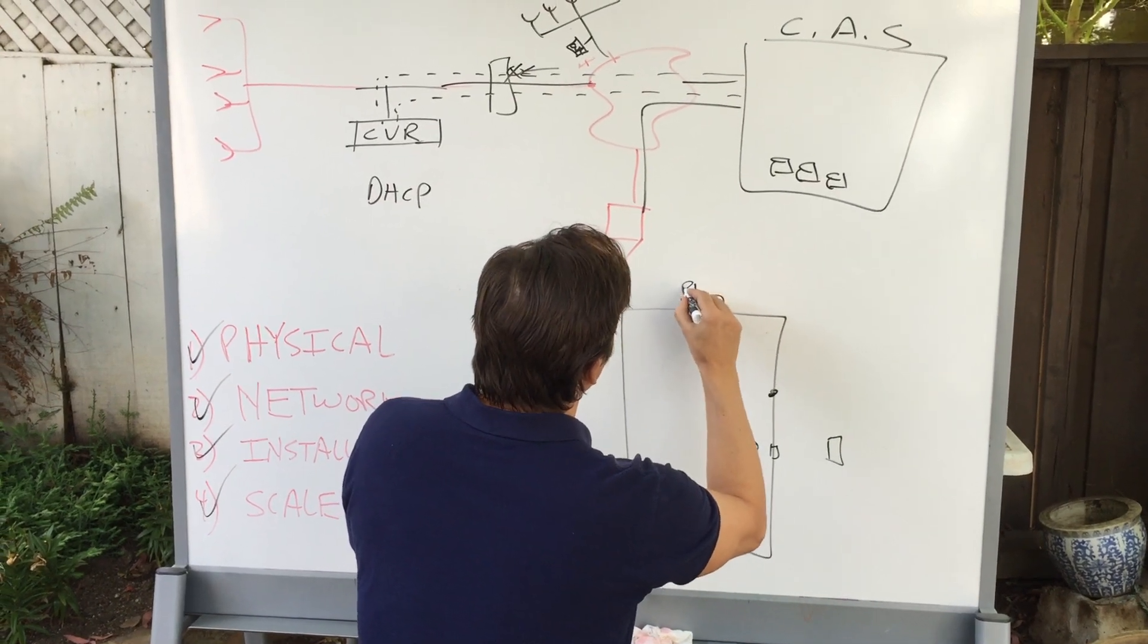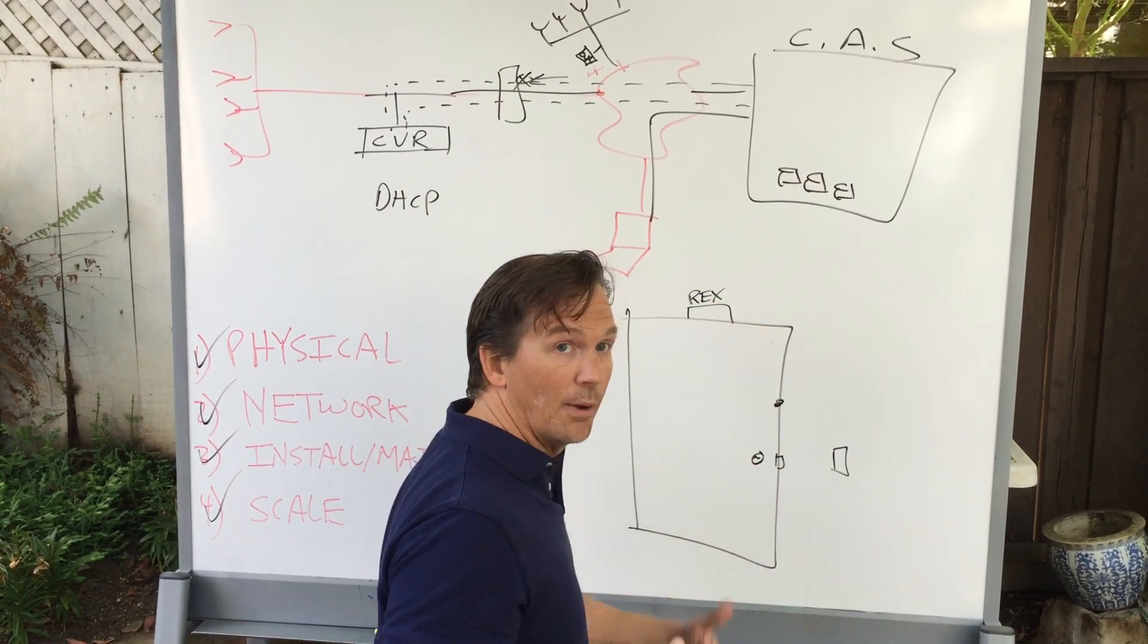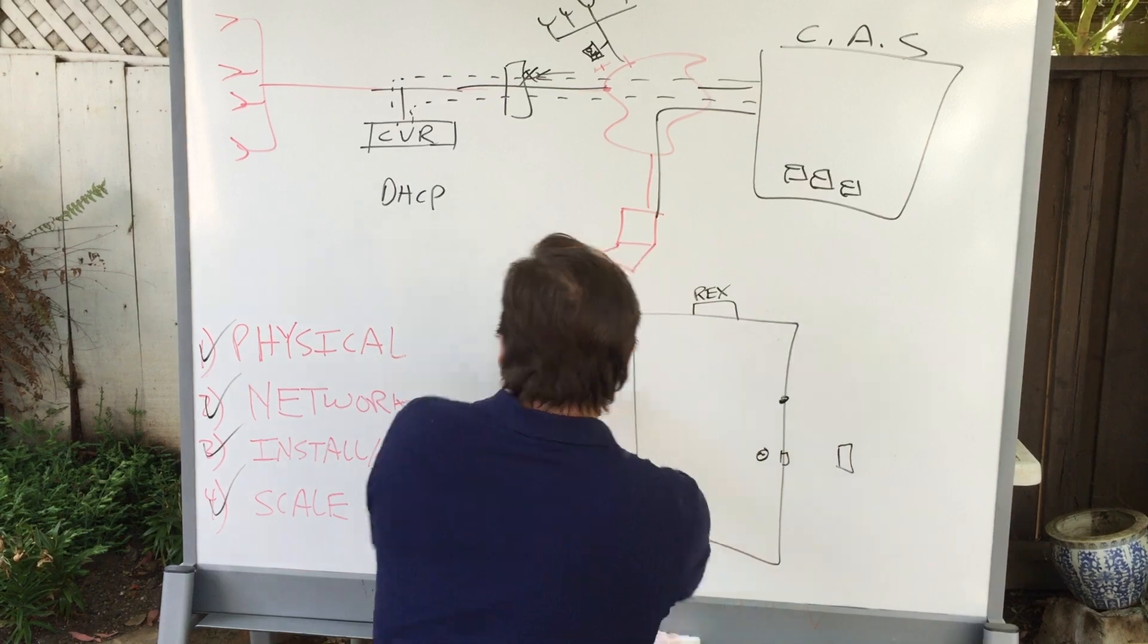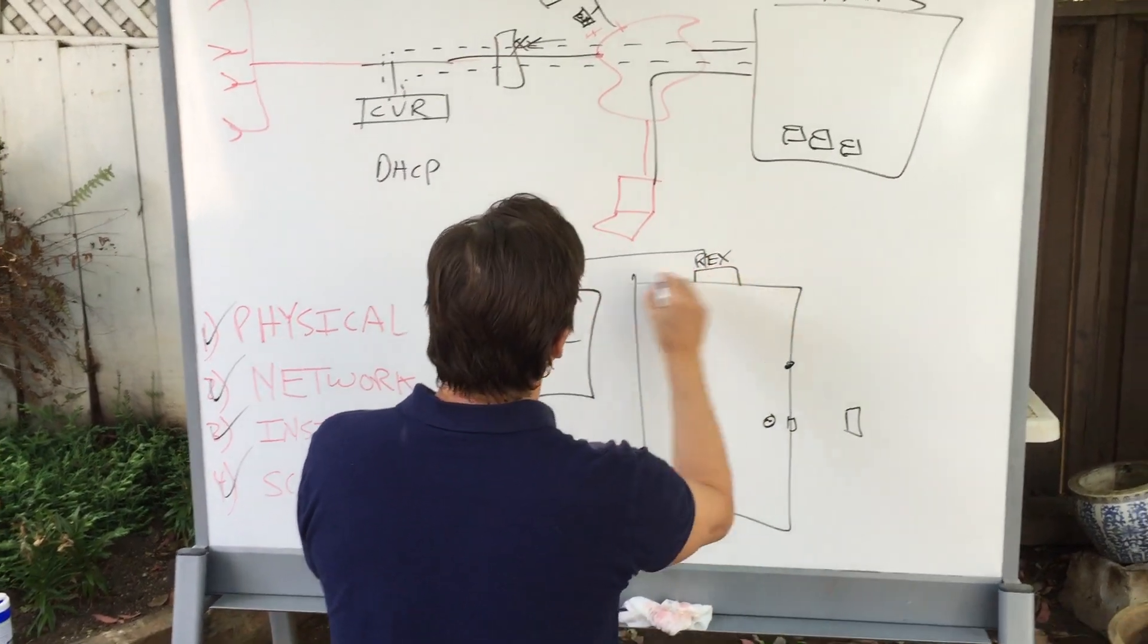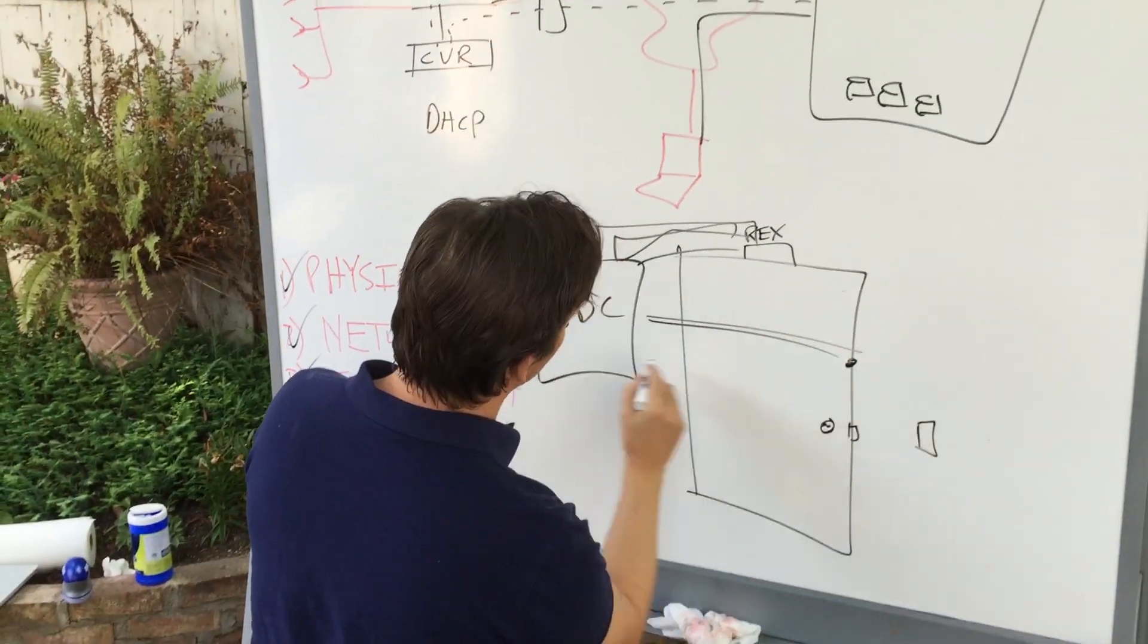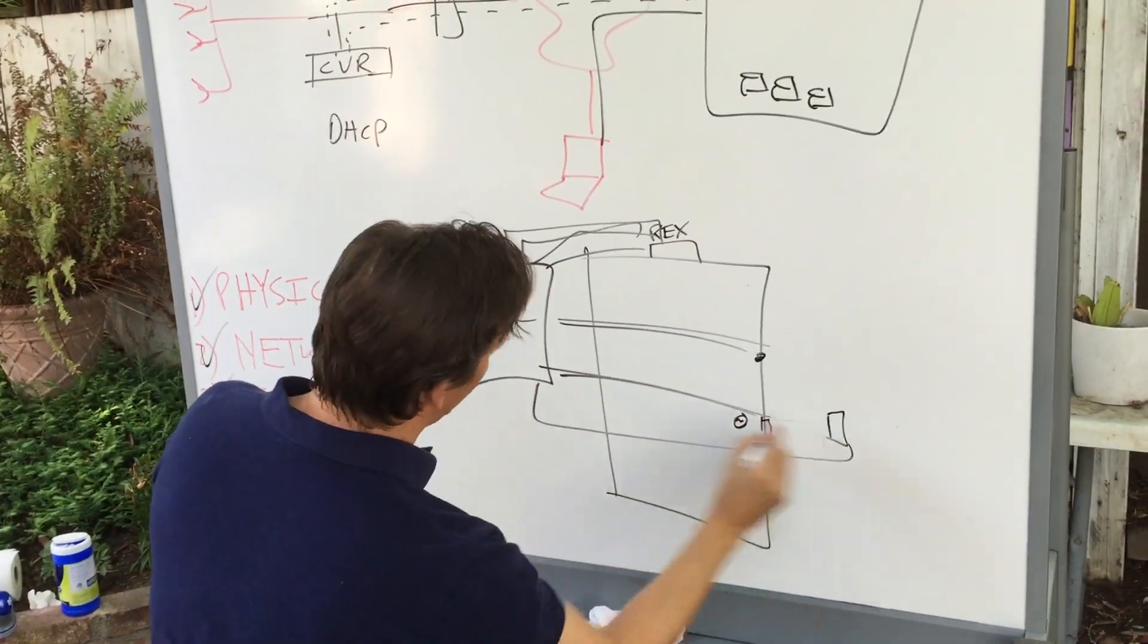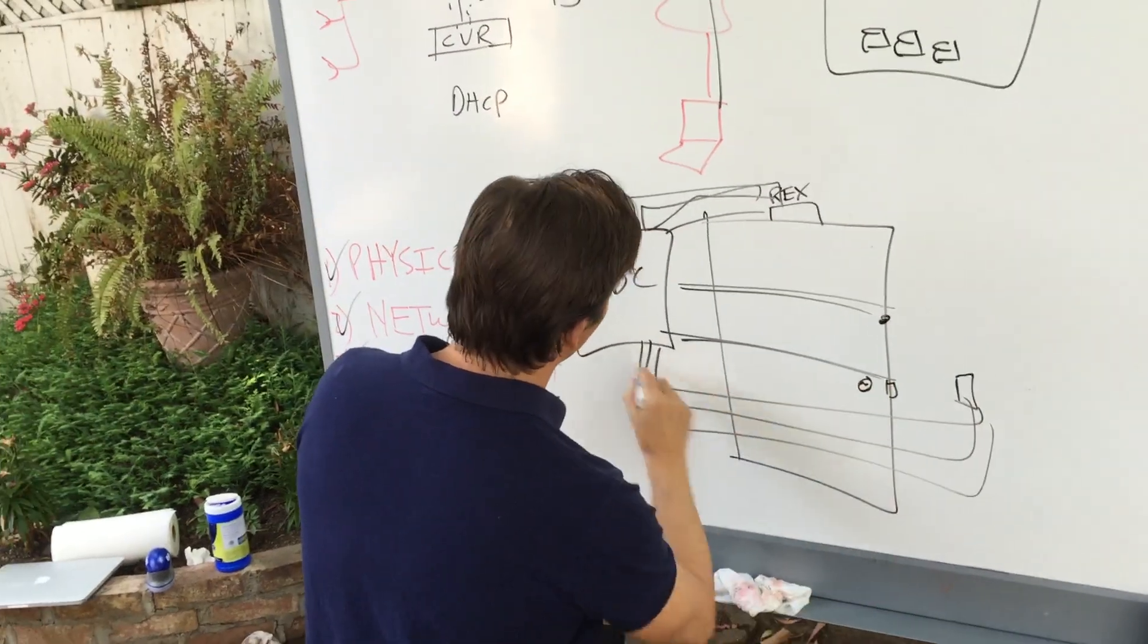Sometimes you have a rex, which is just a motion detector on the inside to help with forced entry. Our cloud door controller here talks to all these things with the right number of dry contacts. Four for the rex, two for the switch, two for the latch, and six for the reader.